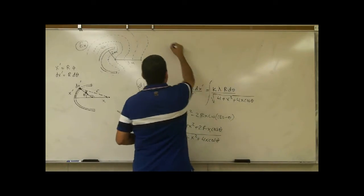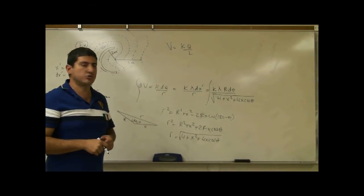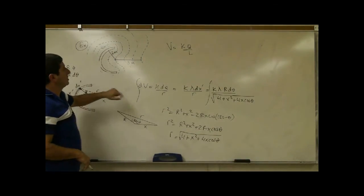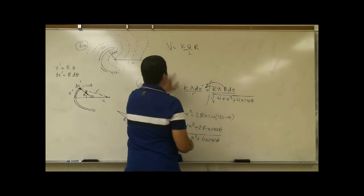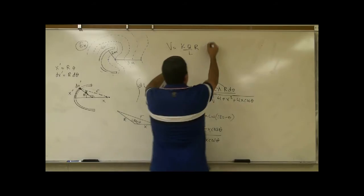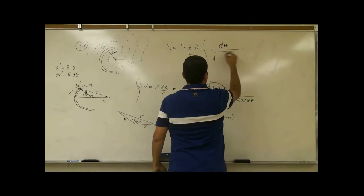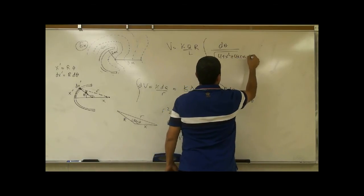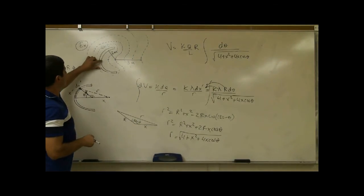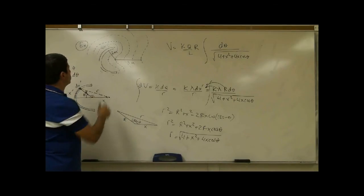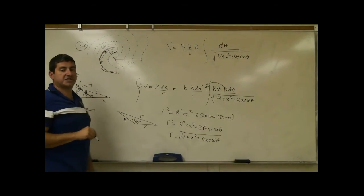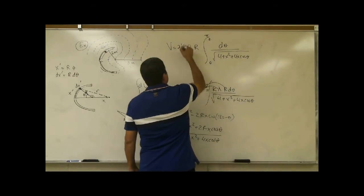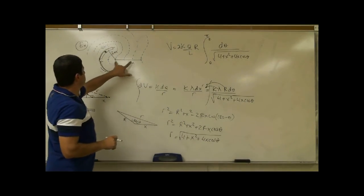Integrating, V = k λ R ∫ dθ / √(4 + x² + 4x cos θ). Here λ = Q / L and for a semicircle L = πR, so λR = Q / π. By symmetry we integrate from 0 to π/2 and double the result, since both halves of the rod contribute equally. This gives a general equation for the potential at any distance x.